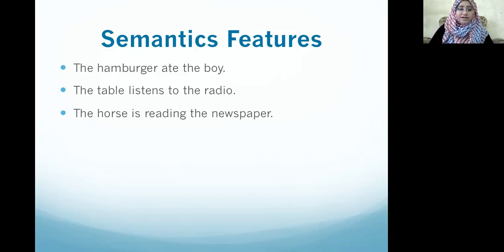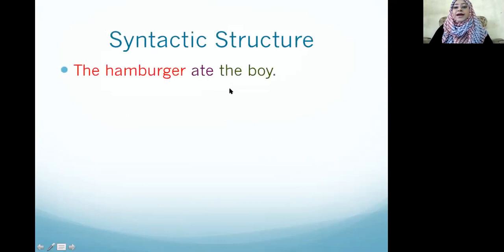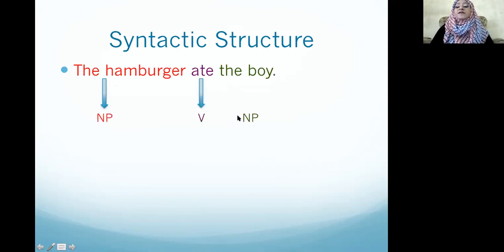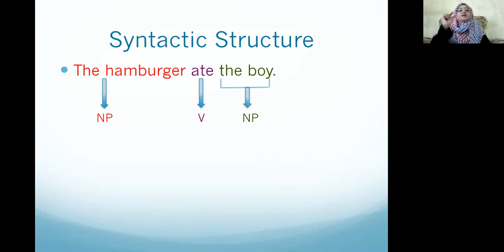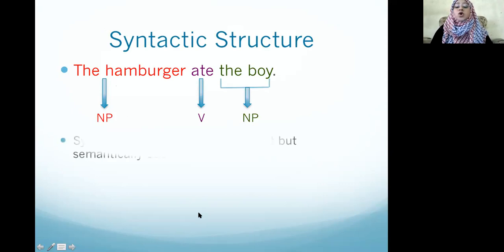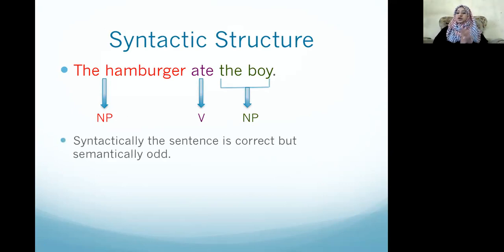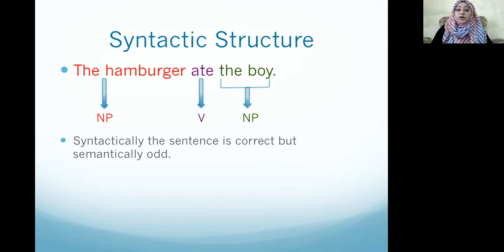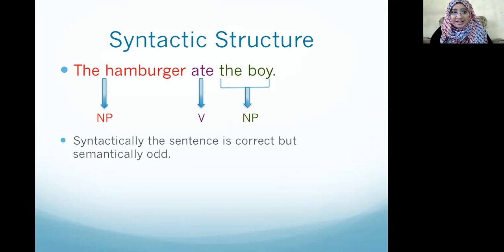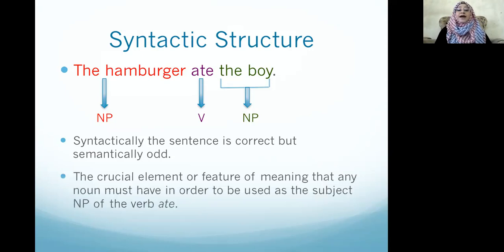Syntactically, 'The hamburger ate the boy' has a subject noun phrase, a verb, and an object noun phrase — all three required components. So the sentence is syntactically correct, but semantically it is not correct. Our mind doesn't accept it. This means the subject noun phrase must have the feature — the quality — to perform the action described by the verb.